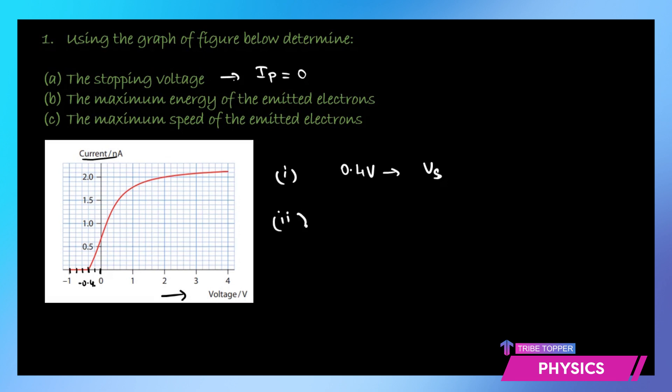The maximum energy of the emitted electrons: Emax, the maximum kinetic energy of the electrons, is going to be eVs, where e is the charge on electron, 1.6 times 10 raised to negative 19, times the stopping voltage which is 0.40. Multiplying this we get 6.4 times 10 to the power minus 20 joules.